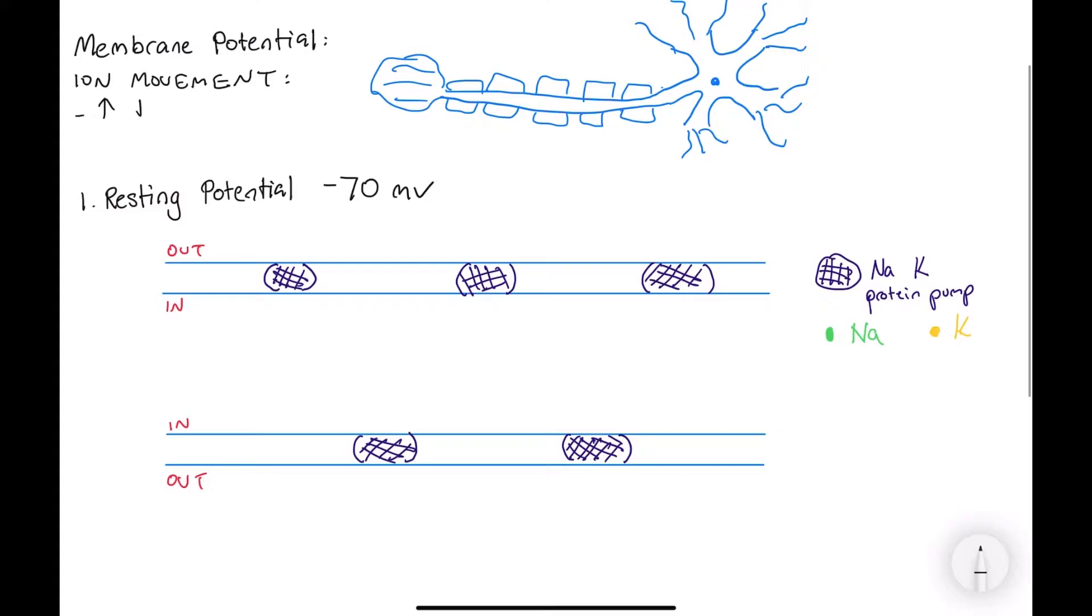First, I'll go over some rules of ion movement. First, they move from high to low concentrations. They are attracted to opposite charges, and it depends on the permeability of the membrane.